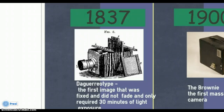In 1837, the Daguerreotype was the first photographic equipment that produced an image that did not fade after exposure. The real benefit to this, however, was that instead of having a model stand still for eight hours, it only required thirty minutes of light exposure to create the image.